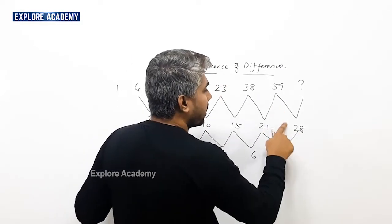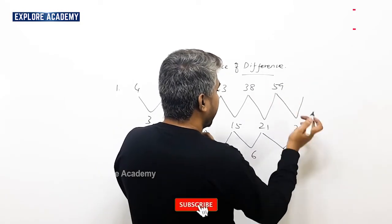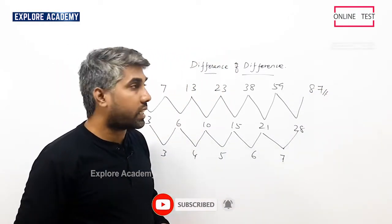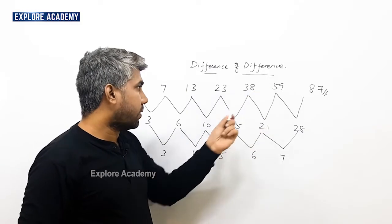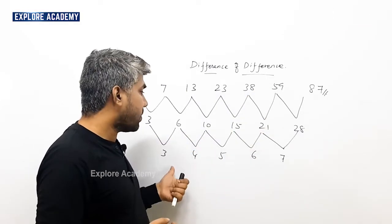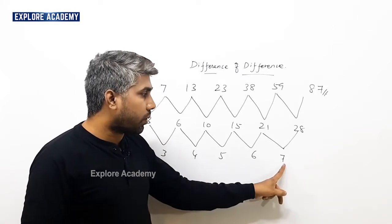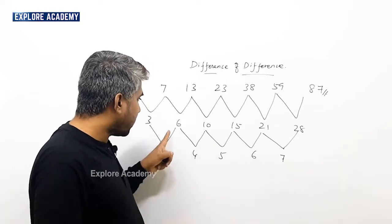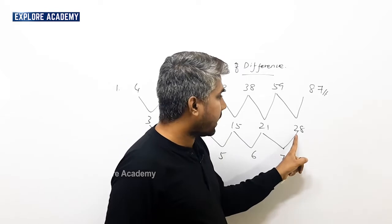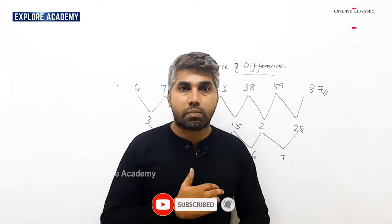If it's 28, then 59 plus 28 is 87. The second-level differences are 3, 4, 5, 6 — increasing order — so automatically 7 is next. 21 plus 7 is 28, and 59 plus 28 is 87. Sum is the same.